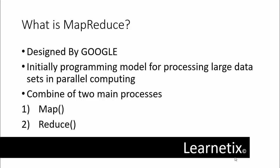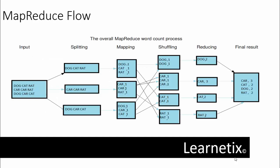What are the advantages of MapReduce? Before that, we have to understand how the flow works. Suppose in the input we have: dog, cat, rat, car, car, rat, and dog, car, cat. These are in my input file.